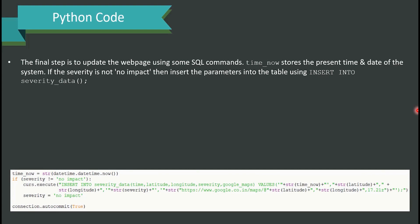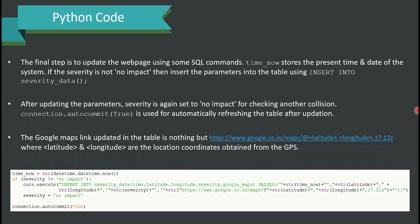The 'severity' variable initially stores 'no impact'. 'recv_data' stores data obtained from the Arduino serial port. FSR data, latitude, and longitude are extracted from recv_data using dot split, then converted to float using the map function. Depending on the FSR value, severity is assigned the appropriate severity level. The final step updates the webpage: 'time_now' stores the current system time and date. If severity is not 'no impact', parameters are inserted into the table using 'INSERT INTO severity_data'. The Google Maps link with latitude and longitude is also updated.